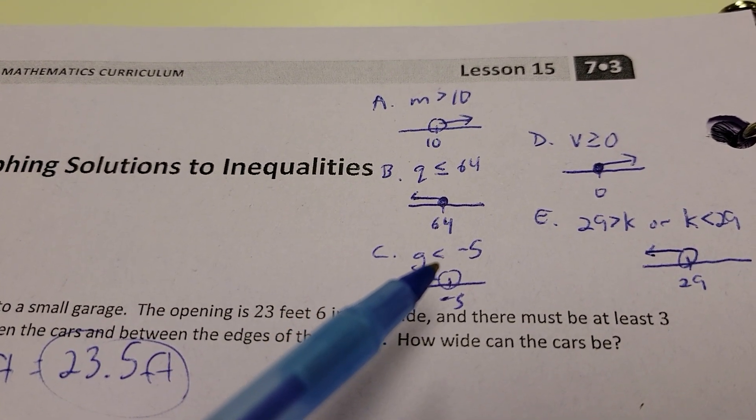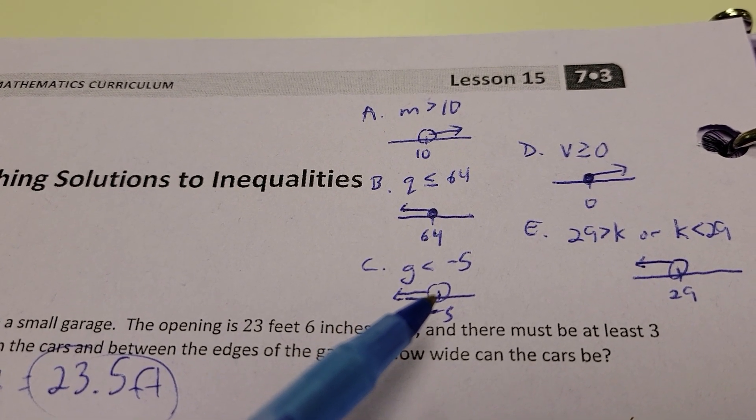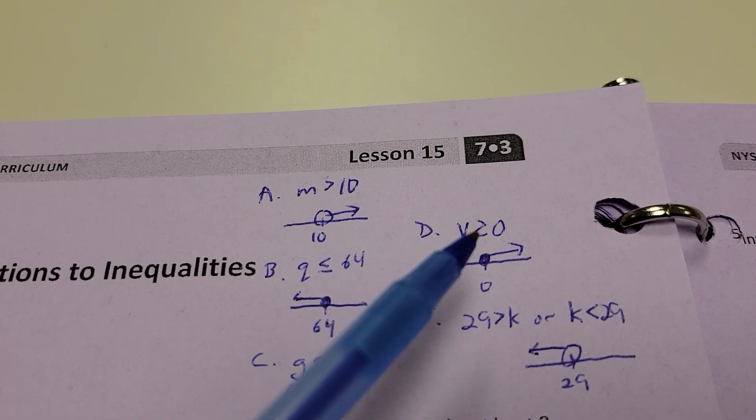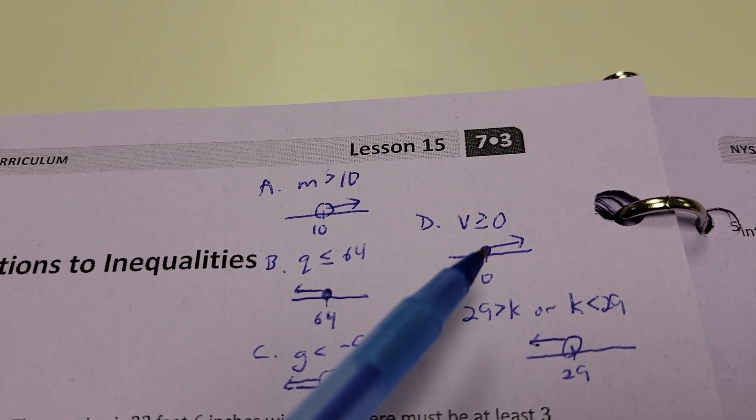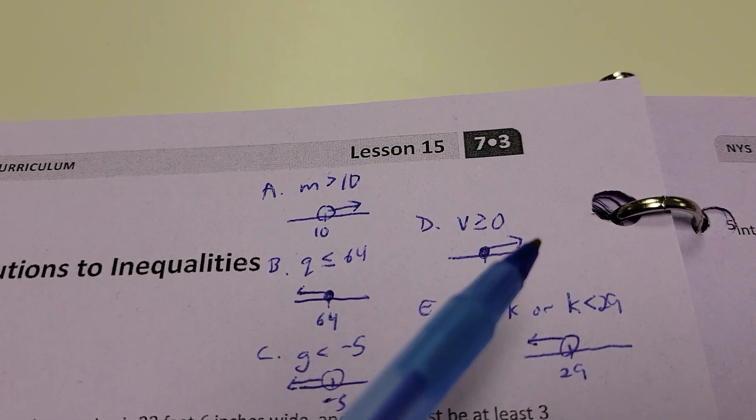And G is less than negative 5. Well, it's an empty circle because it does not include negative 5, and the arrow's anything to the left of that. V is greater than or equal to 0, so 0 actually counts because I have the bar underneath, so I fill it in, darken it in, and anything greater than 0 over there.